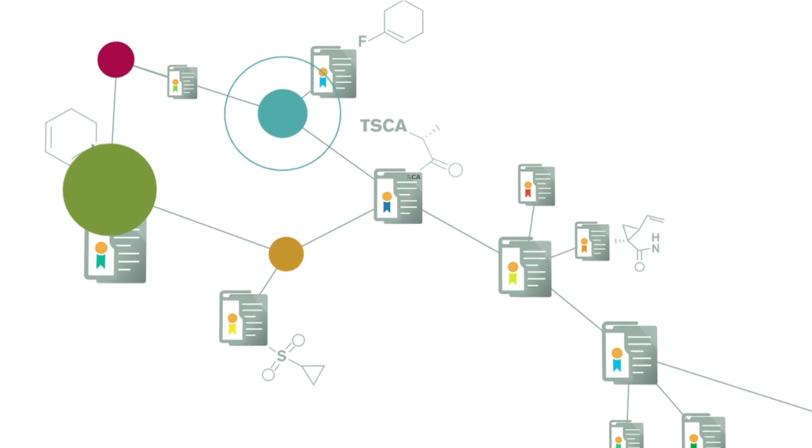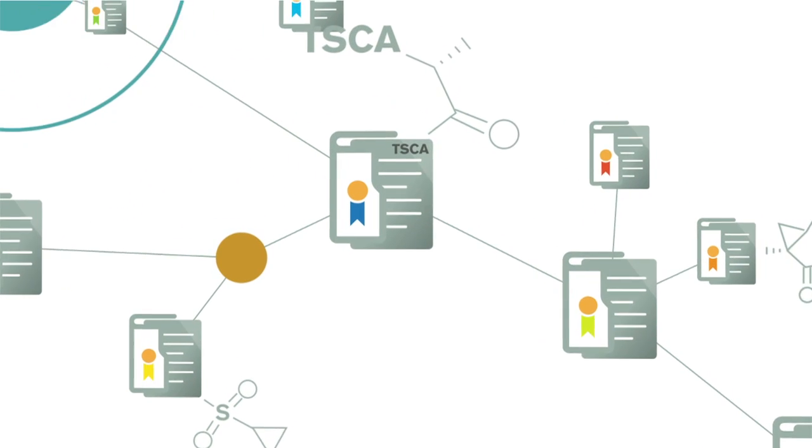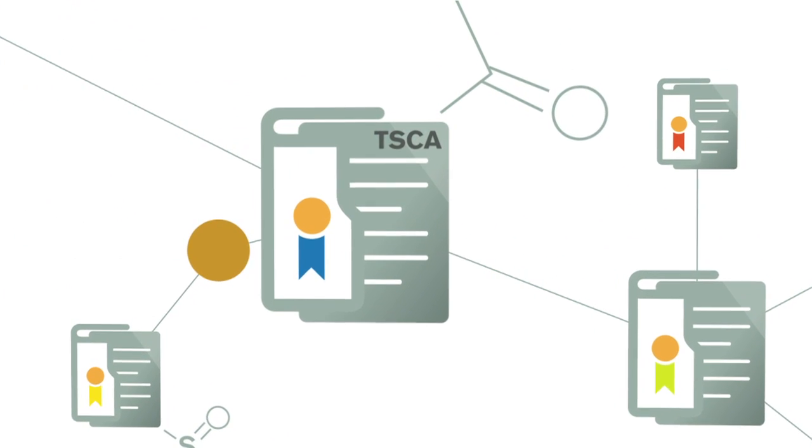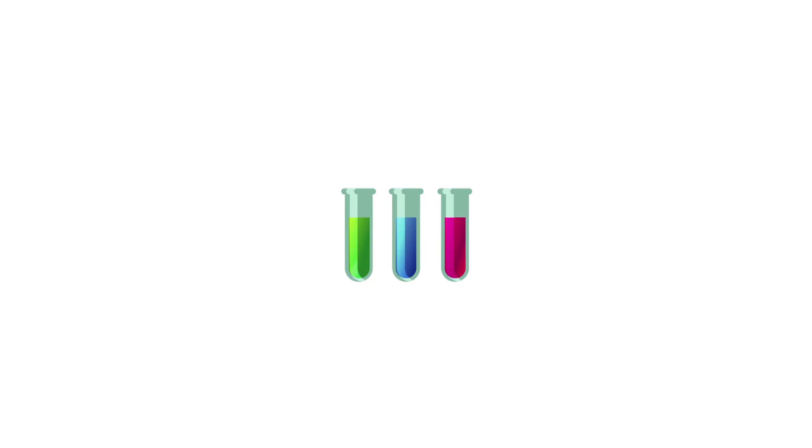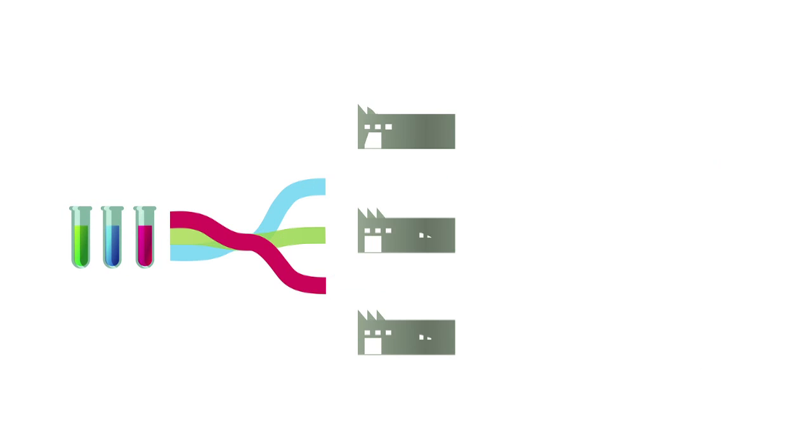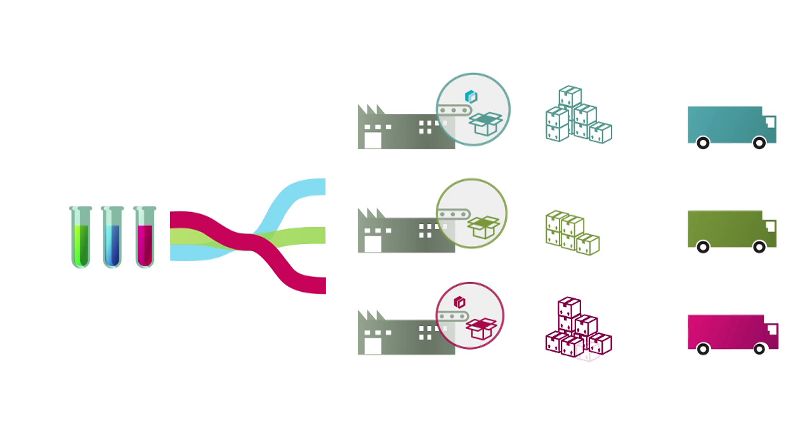The Toxic Substances Control Act, or TSCA, has been a very important part of this system. It gives the EPA authority to regulate industrial chemicals before and after they enter the market. This in turn impacts nearly everything we produce, import and use in our daily lives.